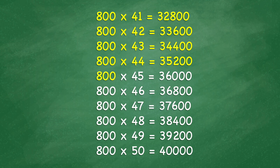800 times 46 equals 36,800. 800 times 47 equals 37,600. 800 times 48 equals 38,400. 800 times 49 equals 39,200.